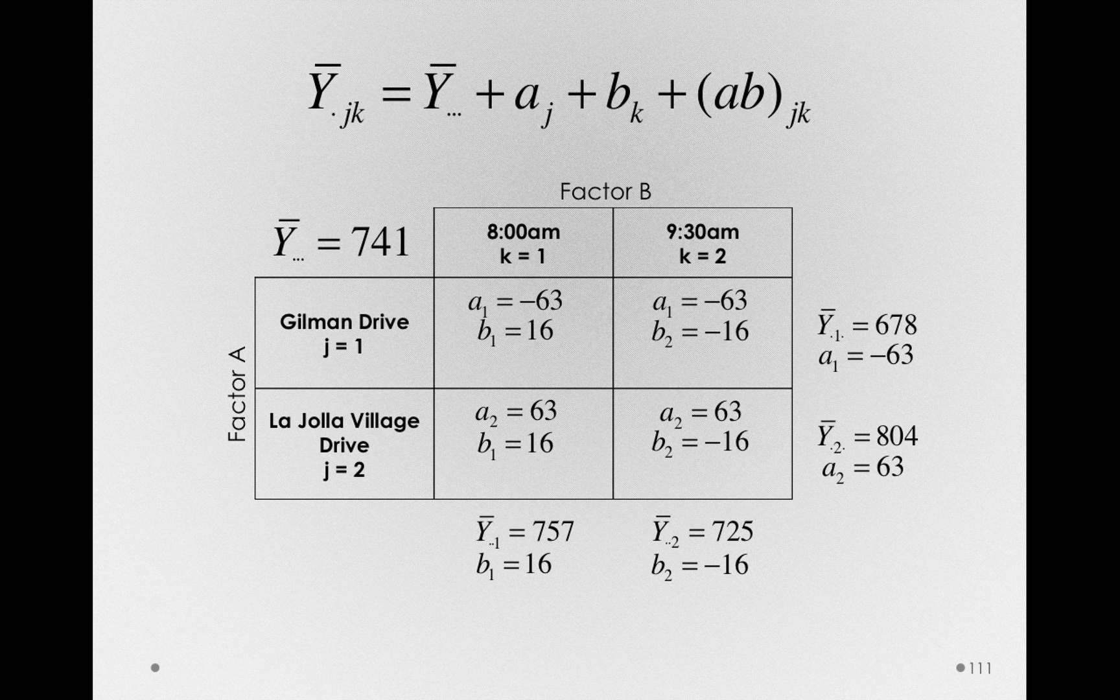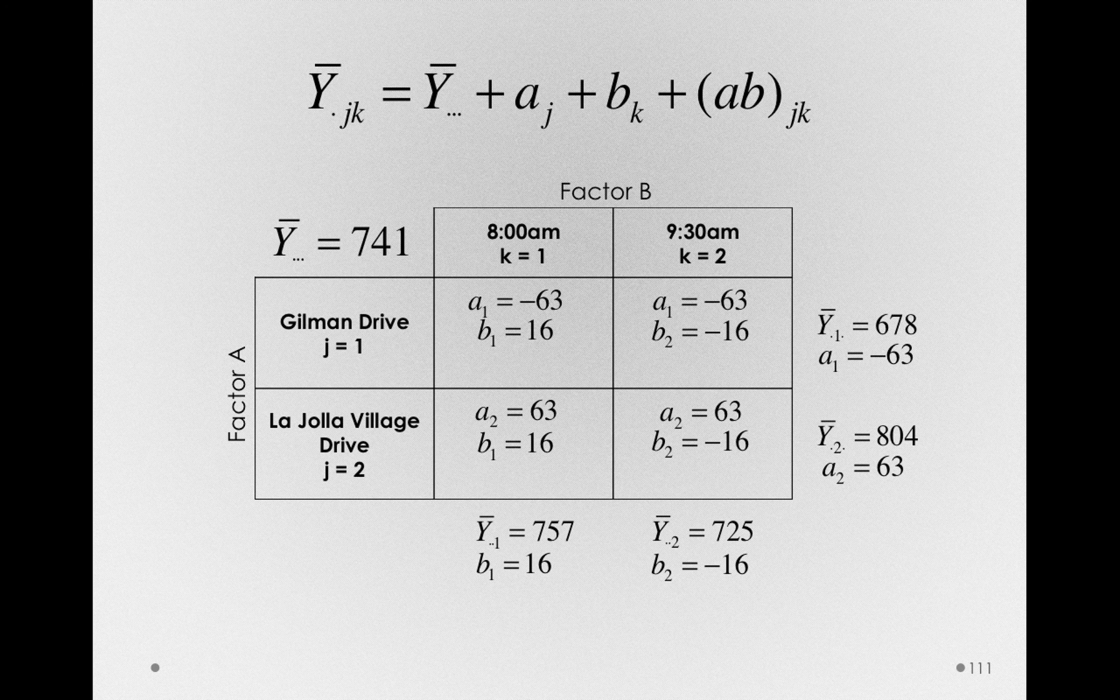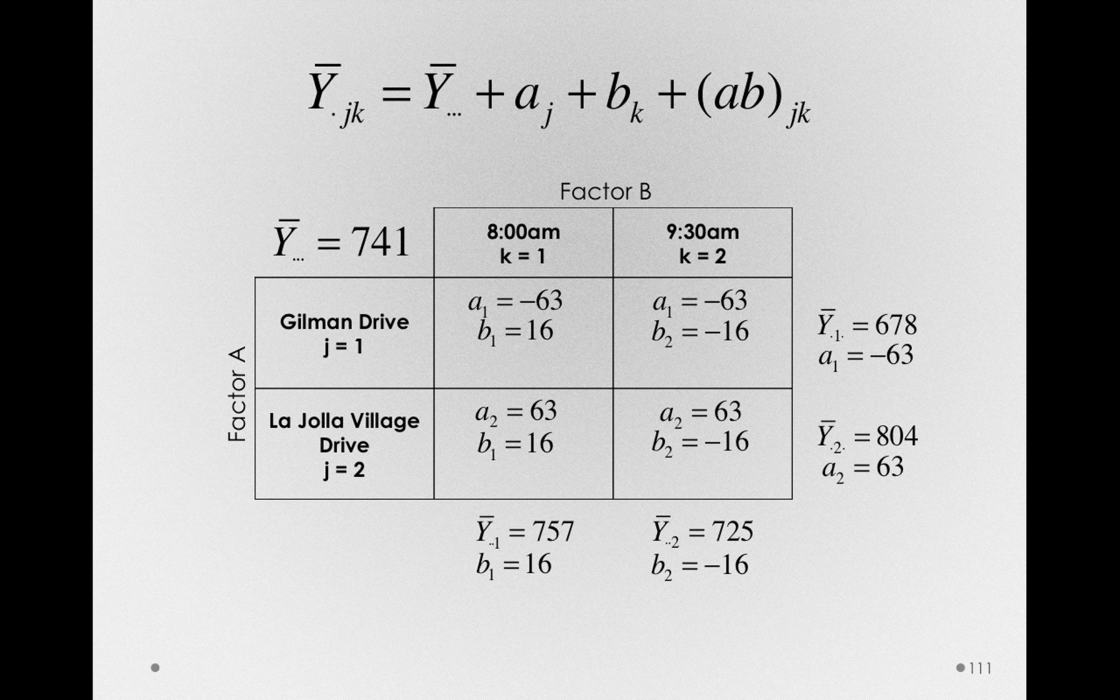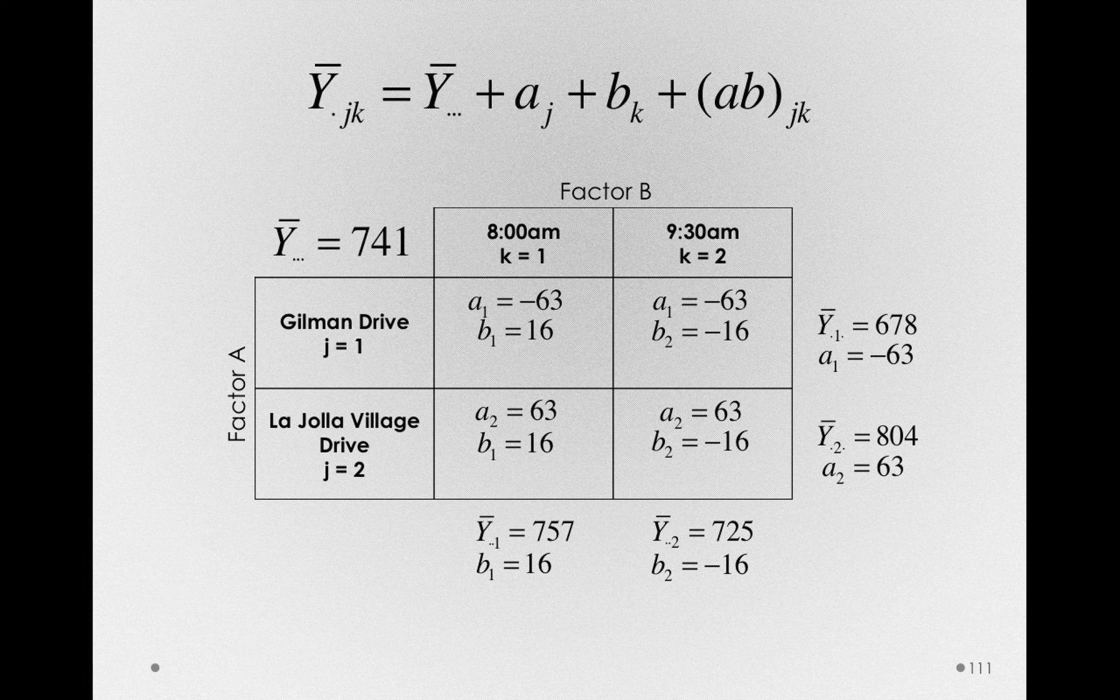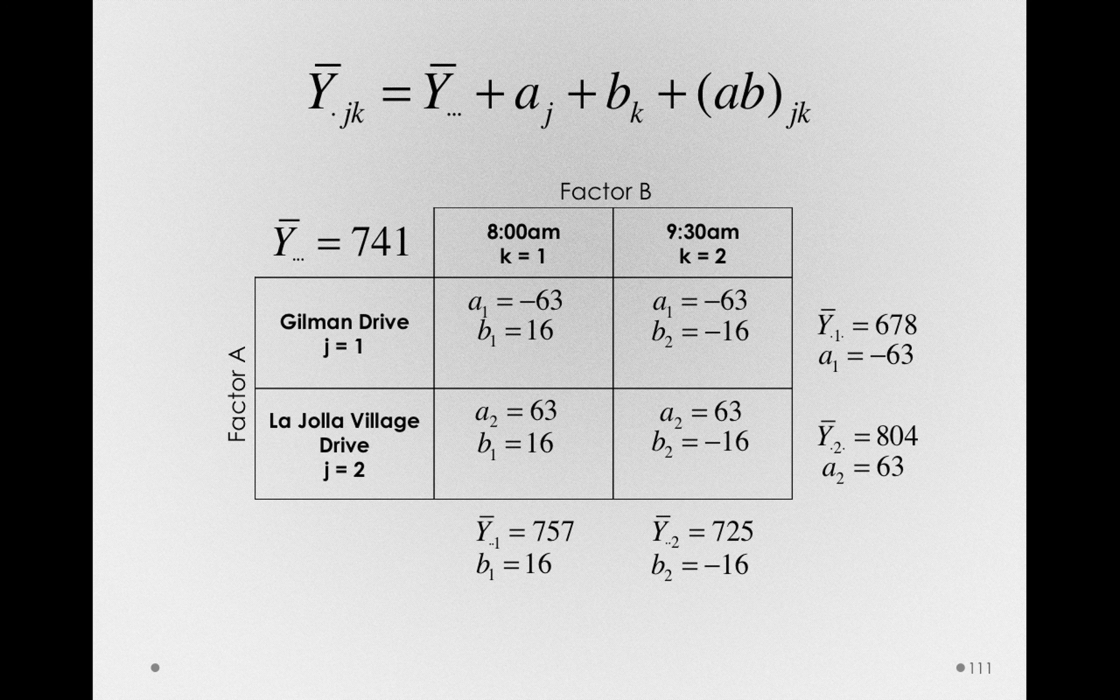So going back to our model, so far we found the offsets associated with the average effect of route and the average effect of time of day. We have one final component, the ABJKs, a component that will capture the degree to which there is an interaction, the degree to which we have to reference one factor when talking about the effect of another factor.